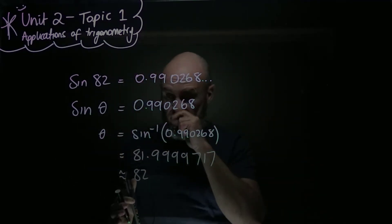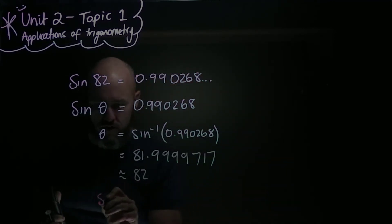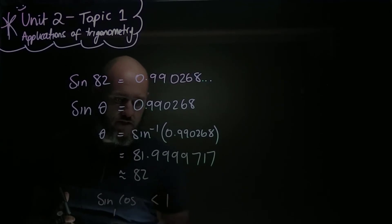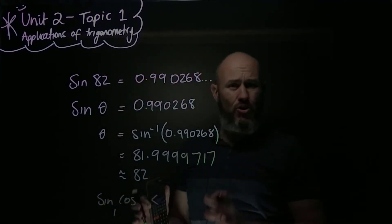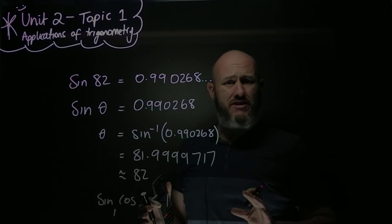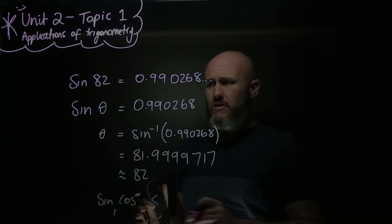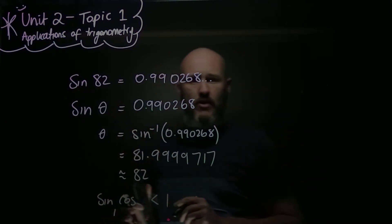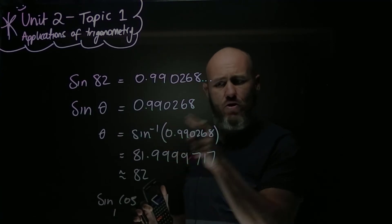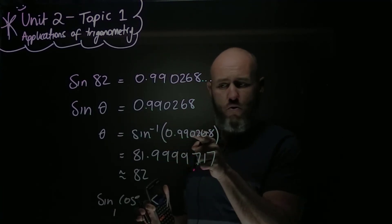Now, here's an important tip for sine and cos. Sine and cos are always less than 1. You do sine or cos of any number, and the answer is always less than 1. So that means that if you're doing sine inverse of a number, you have to do sine inverse of a number less than 1, or cos inverse.